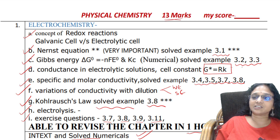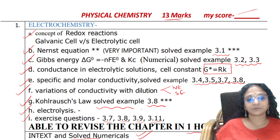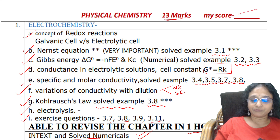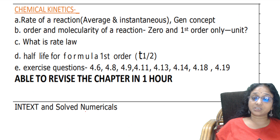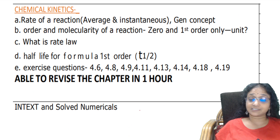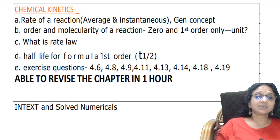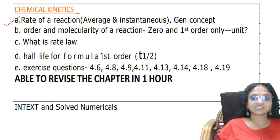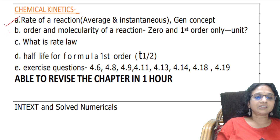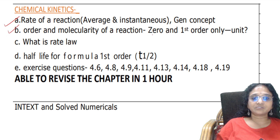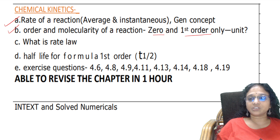After electrochemistry, please write a test and note your marks. From there we gradually go to chemical kinetics. In chemical kinetics, rate, average rate, and instantaneous rate are compulsory. Order and molecularity of a reaction - zero order and first order only - you need to learn, along with their units.